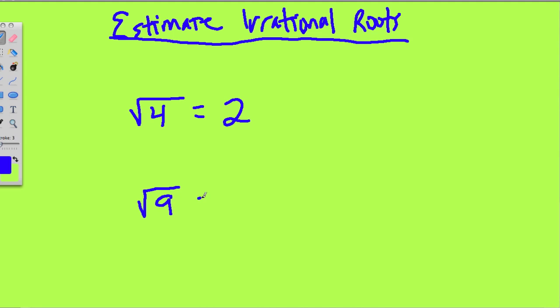The square root of 9 is 3. Well, what about the square root of something like 5, or 6, or 7, or 8, or 9? Notice, the square root of 5, since it's between 4 and 9, it has to also be between 2 and 3.